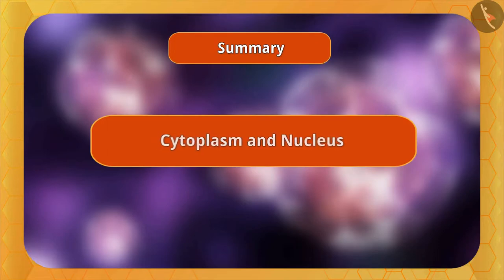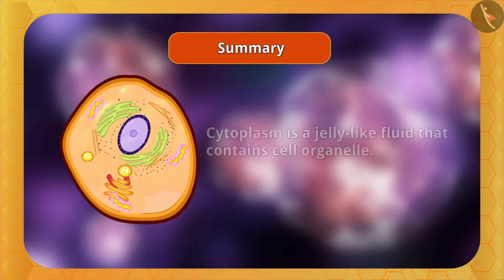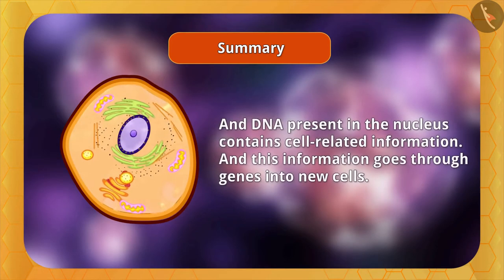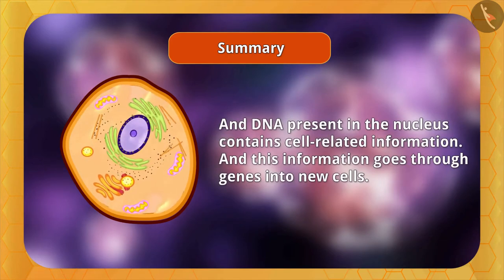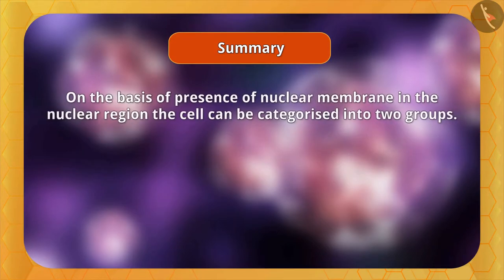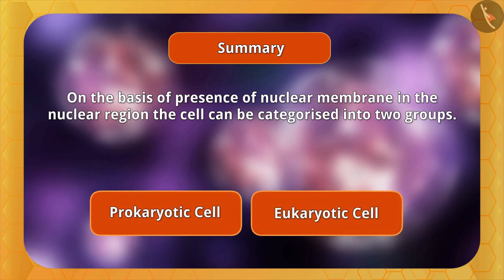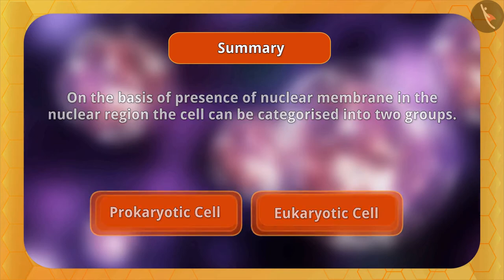In summary, we learned about cytoplasm and nucleus in this video. Cytoplasm is a jelly-like fluid that contains cell organelles. DNA present in the nucleus contains cell-related information, and this information passes through genes into new cells. Based on the presence of a nuclear membrane, cells are categorized into two groups: prokaryotic and eukaryotic. Next, we will learn about cell organelles.